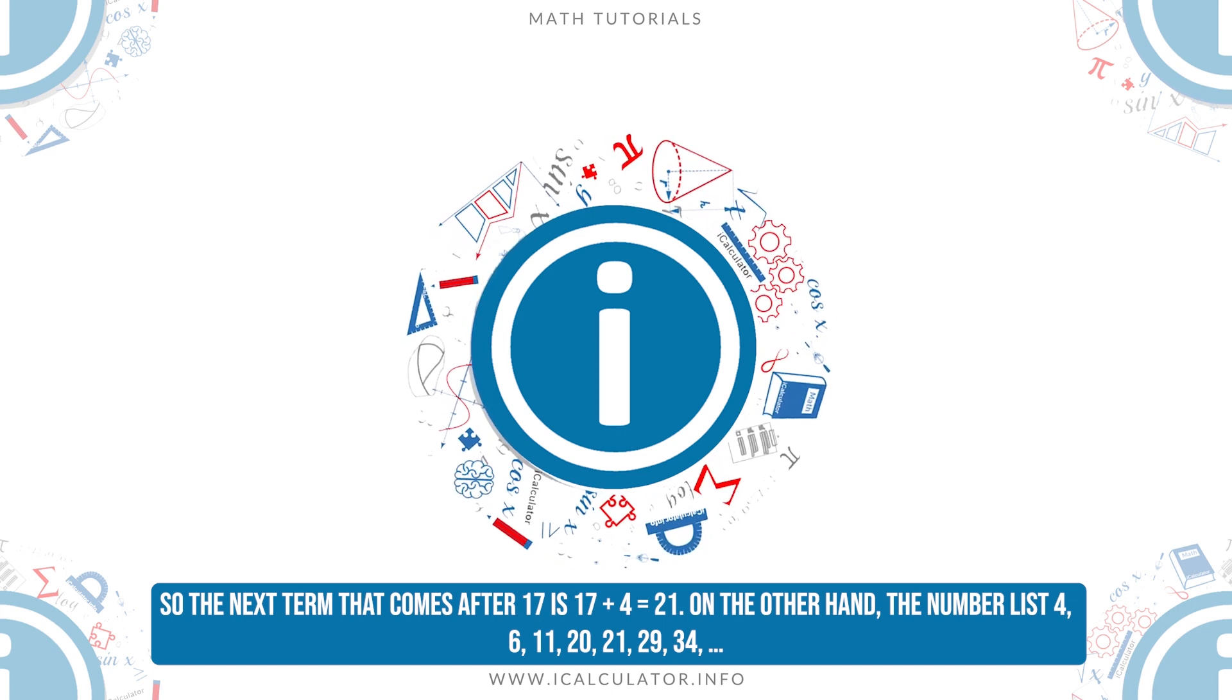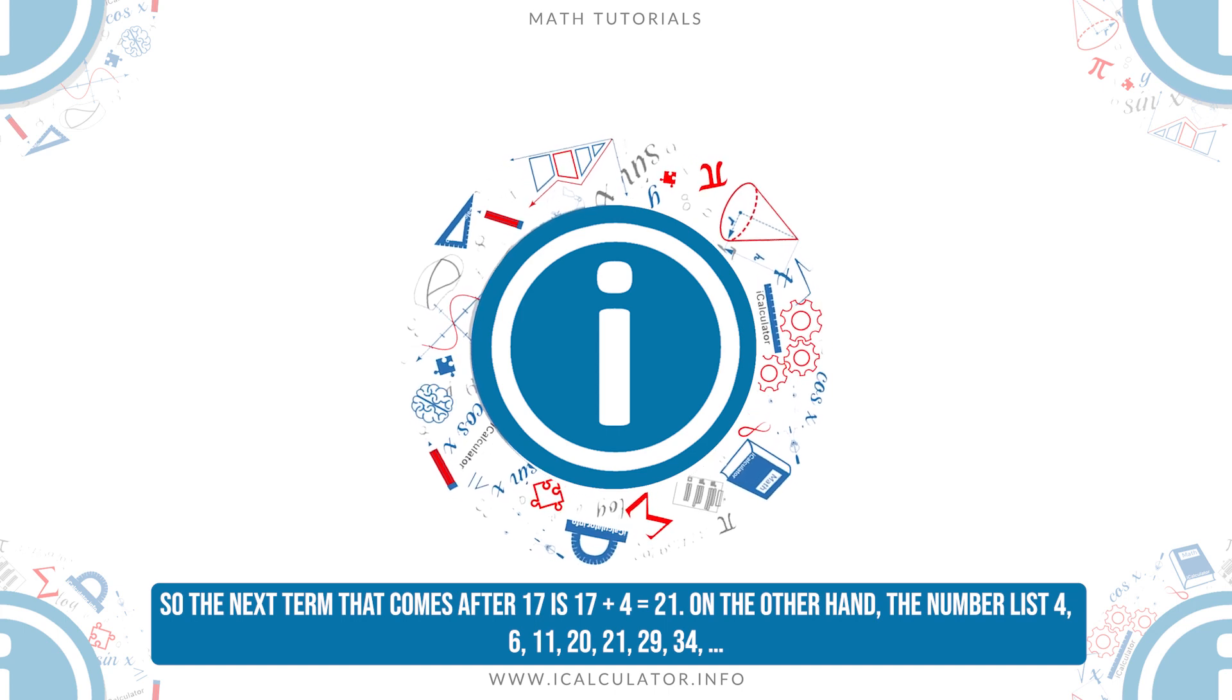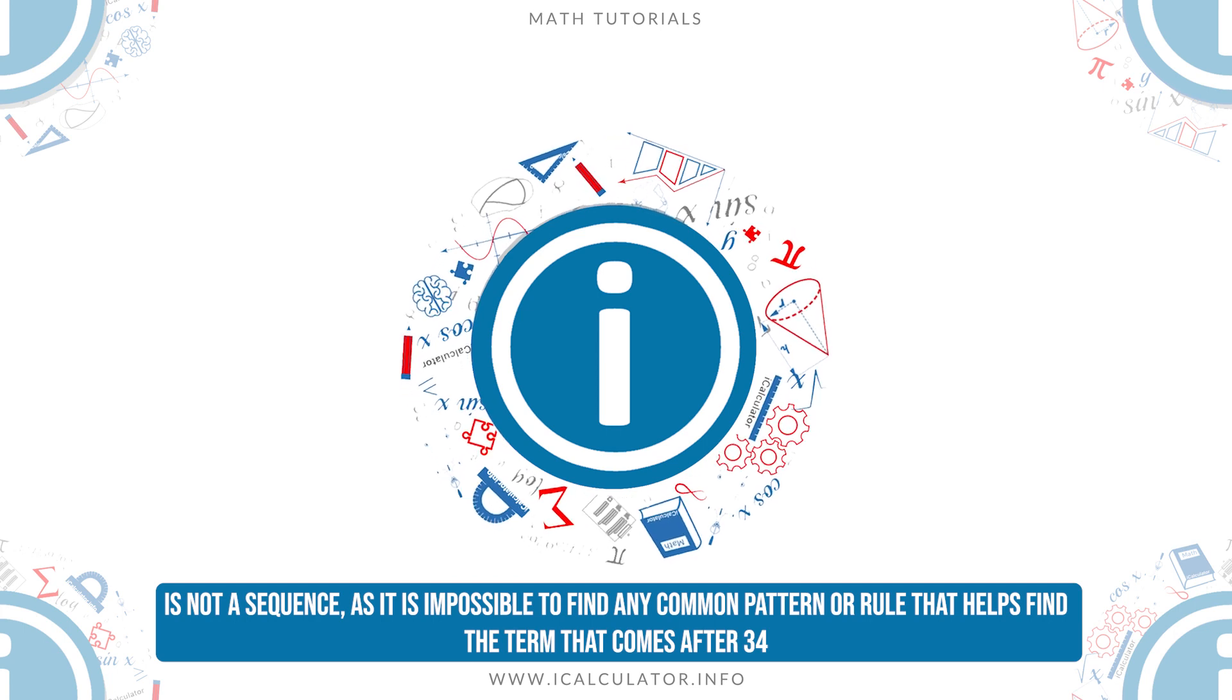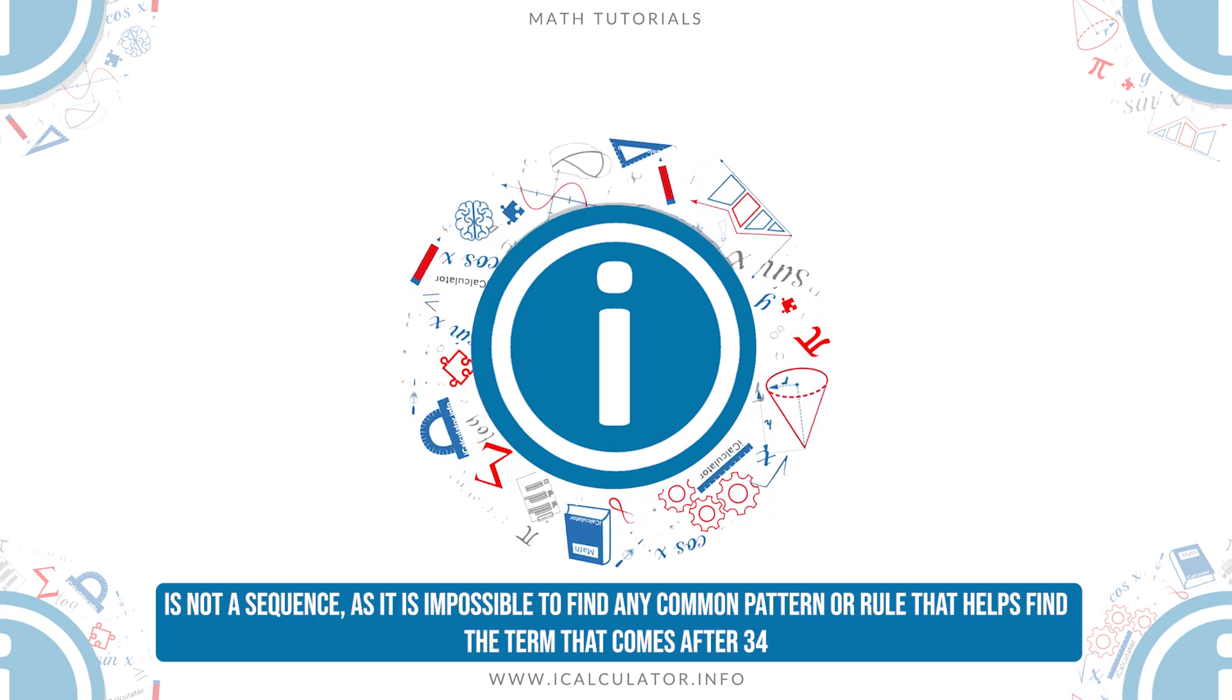On the other hand, the number list 4, 6, 11, 20, 21, 29, 34 is not a sequence, as it is impossible to find any common pattern or rule that helps find the term that comes after 34.